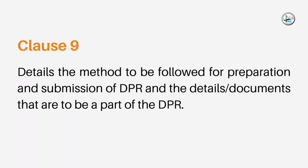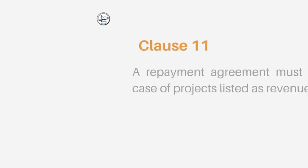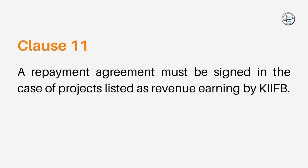Clause 9 details the method to be followed for preparation and submission of DPR and details and documents that are to be a part of the DPR. Clause 10 mentions that KIF-B can decide the fund release method. Clause 11 says that a repayment agreement must be signed in the case of projects listed as revenue earning by KIF-B. We will be discussing the basic steps of project submission and approval as a separate section in this module, and will also have a detailed module on the topic later.